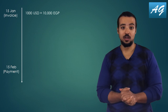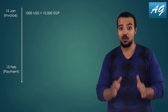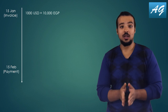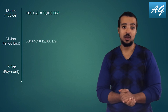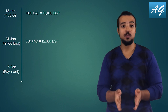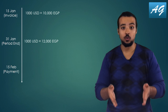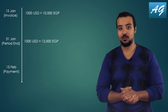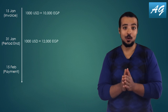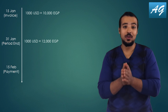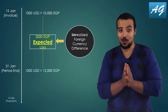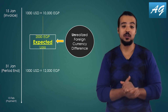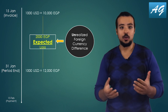Now let's go back to the time of the invoice on the 15th of January. The exchange rate was 1 USD equal to 10 Egyptian pounds. At the end of January, as a company we are required to report our financial statements, and according to some financial standards we have to report our foreign accounts as if we are going to pay everything today. Let's assume the end-of-January exchange rate was 1 USD equals 12 Egyptian pounds. So in my financial statements I'm going to report accounts payable for 1,000 USD and 12,000 Egyptian pounds — not 10,000. The 2,000 difference is an unrealized foreign currency difference.